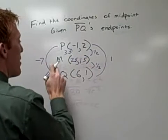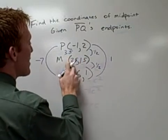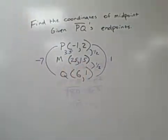So the coordinates of our midpoint would be positive 2 and 1 half and positive 1 and 1 half.